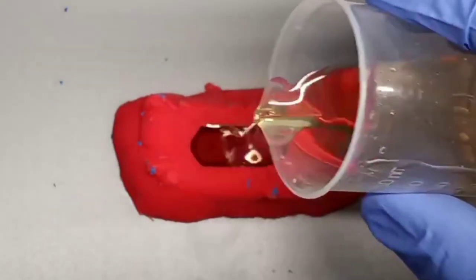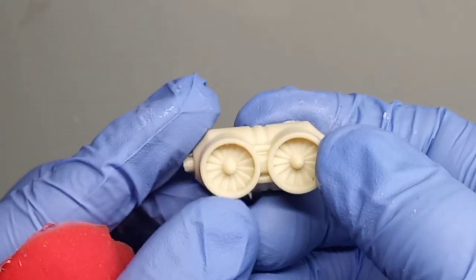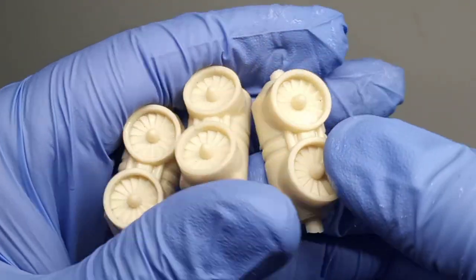Add the resin to your one-part mold and remove all the air bubbles as well. Once fully dried, you'll get a nice solid piece like these.